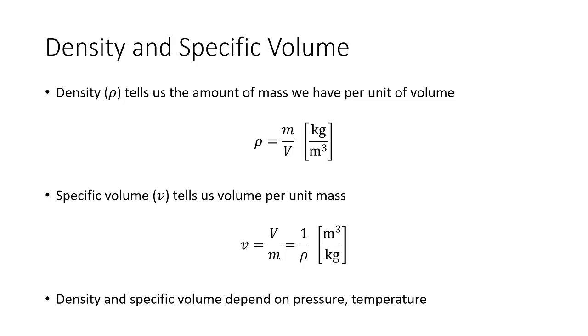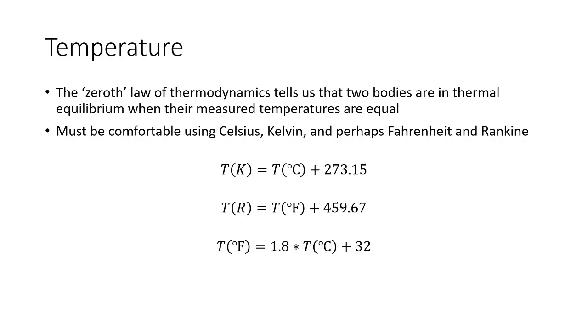So talking about pressure and temperature, those are two quantities that we're really going to want to know well to be successful in thermodynamics. To start talking about temperature, we first need to address what's known as the zeroth law of thermodynamics. It's really an intuitive idea. Anybody could kind of reason through why this makes sense, but we do have to state it. Basically, the zeroth law tells us that two bodies are in thermal equilibrium when their measured temperatures are equal. So if we have two bodies in contact, heat is going to flow from high heat to low heat until the two reach an equilibrium temperature. That's what the zeroth law tells us.